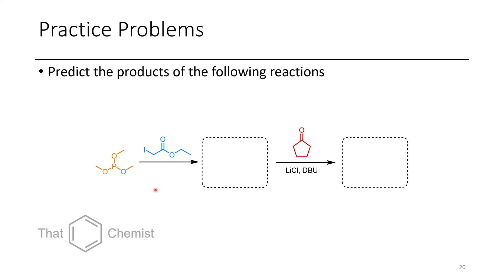In this final problem, I want you to show what the intermediate product would be from this first reaction between trimethyl phosphite and ethyl iodoacetate, as well as the subsequent reaction with cyclopentanone in the presence of lithium chloride and DBU. And so with that, I hope that this has been a useful video on the Wittig reaction and the Horner-Wadsworth-Emmons reaction. If you have any comments, please leave them below, and it would really help out the channel if you leave a like and subscribe. Have a great day.